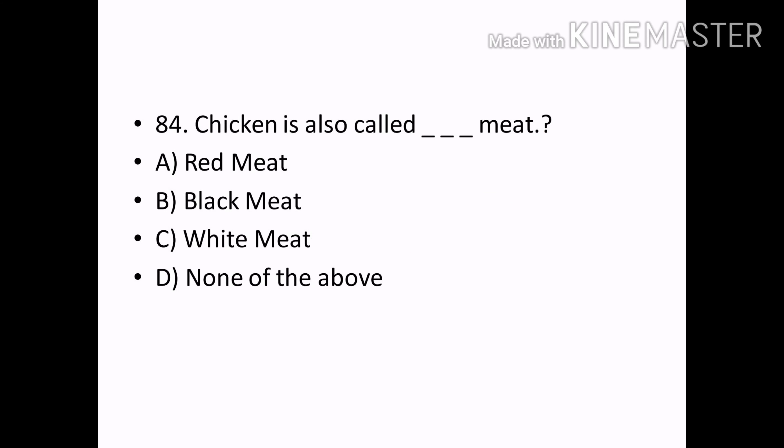Chicken is also called: Options — Red meat, Black meat, White meat, None of the above. Correct answer: Option C — White meat.